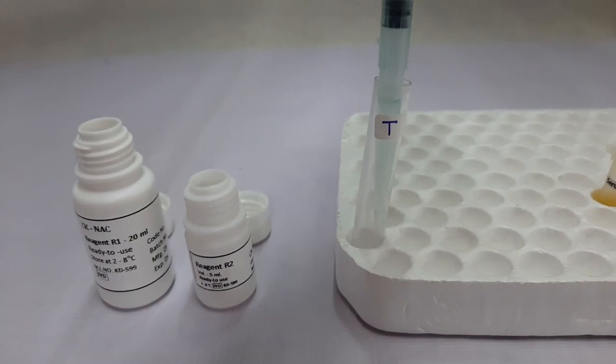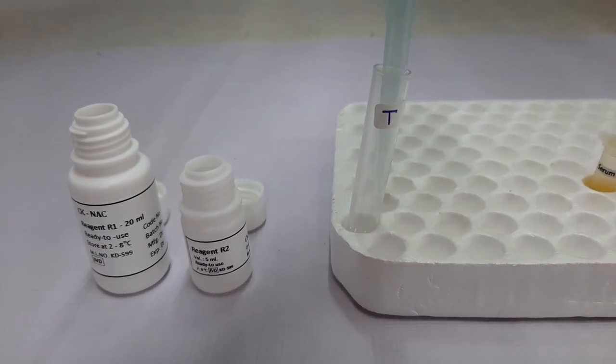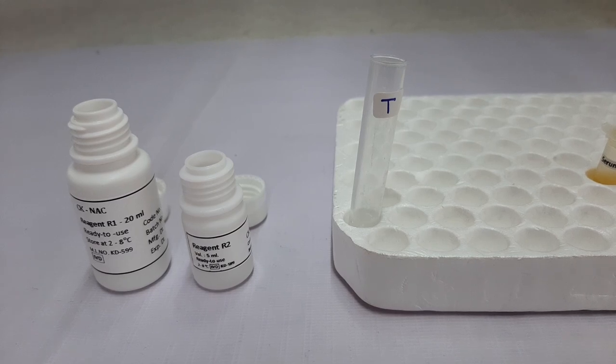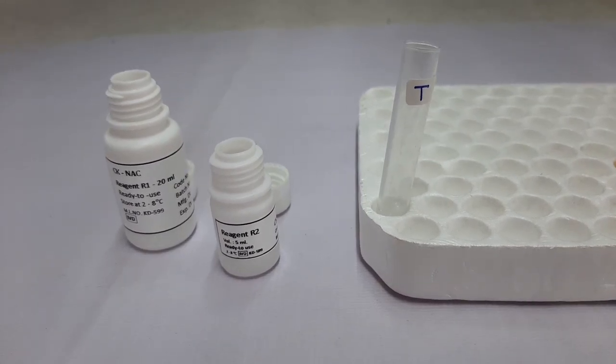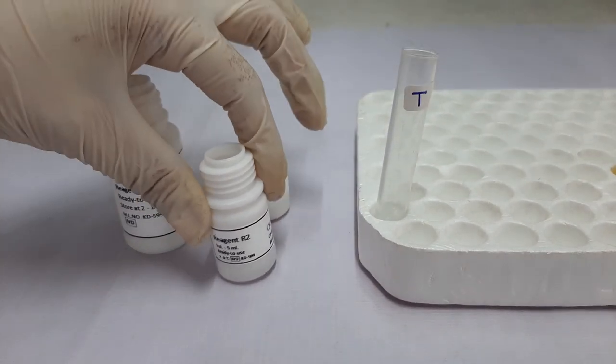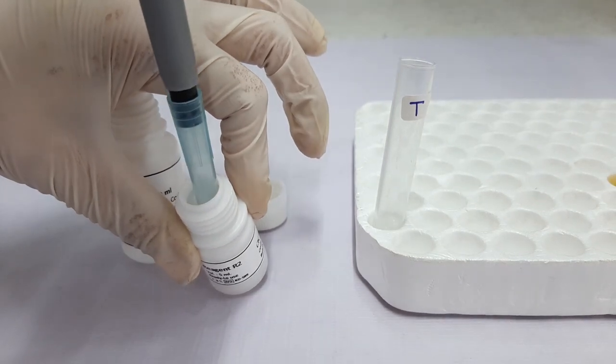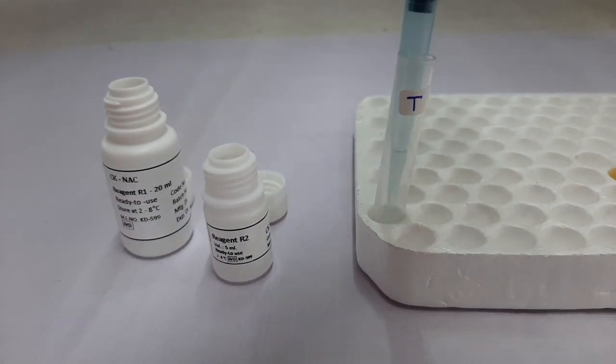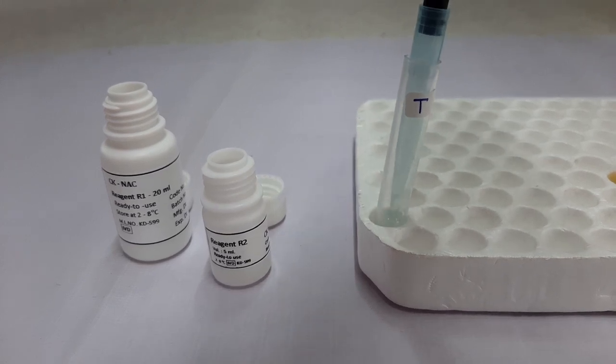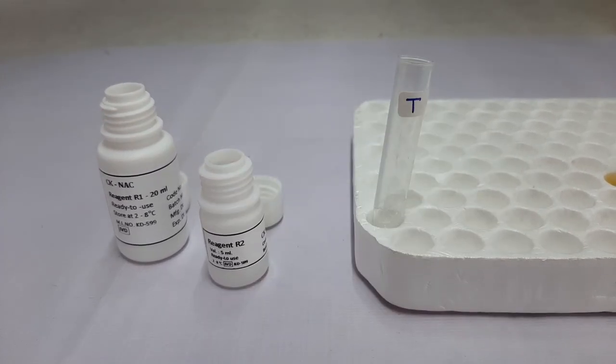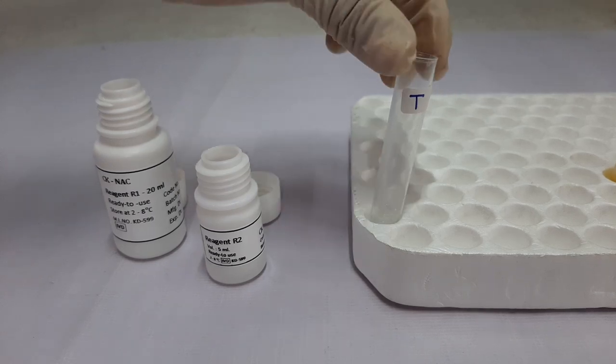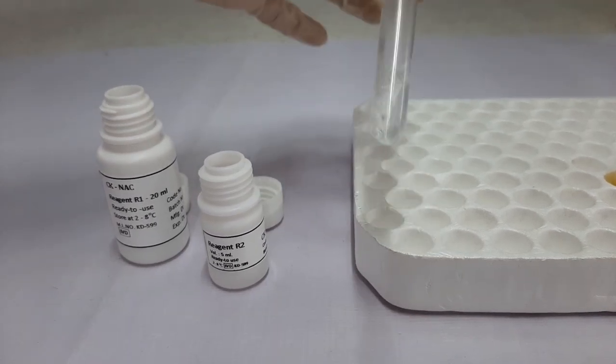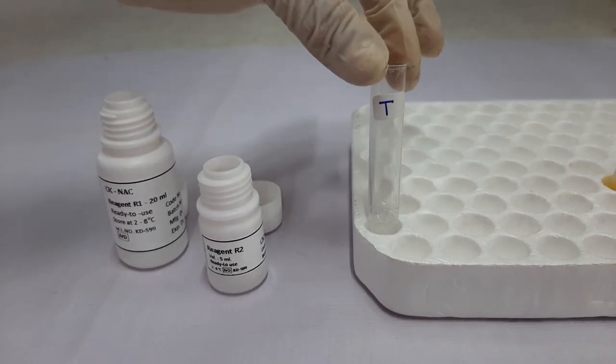And then add it to the tube which is already pre-labeled for the test. Next, change the tip and then take 200 microliters of R2 without any air bubble, and then add to the previous tube in which R1 was already added. Mix it thoroughly and now our working solution has been prepared.